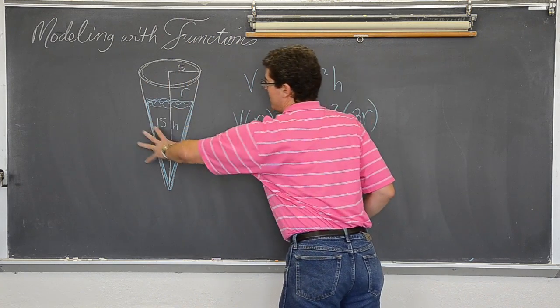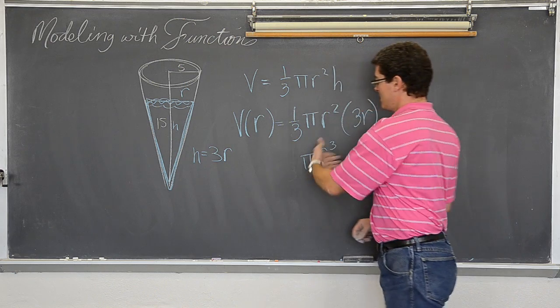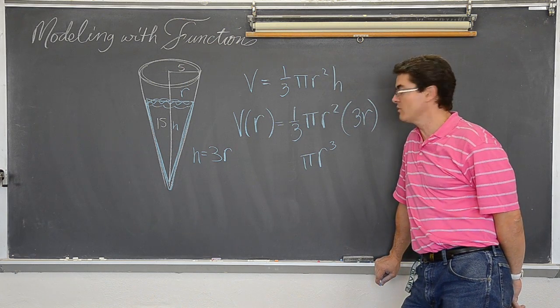So for a cone, specific cone, where the depth is 3 times the radius, my volume of my cone in terms of r is just π r³. Pretty cool.